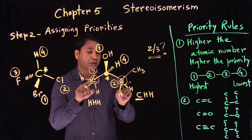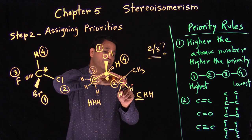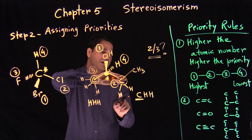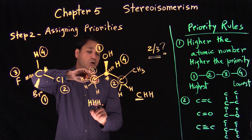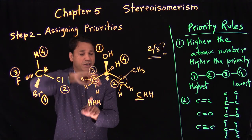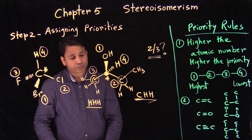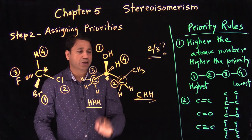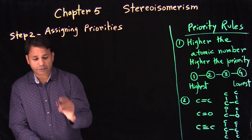Again, what you're doing here is comparing the first point of contact. If it's the same, then go with the second point of contact — what's coming out: carbon, hydrogen, and hydrogen versus hydrogen, hydrogen, hydrogen. This has a carbon which is higher, so that gets the higher priority.